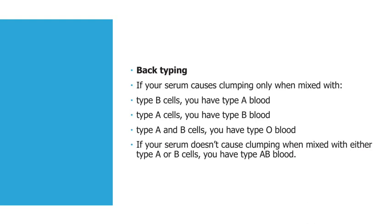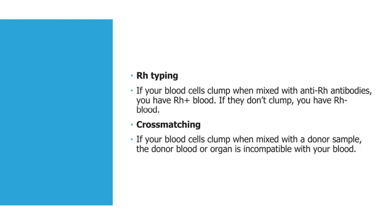Back typing results: if your serum causes clumping only when mixed with type B cells, you have type A blood. If it causes clumping with type A cells, you have type B blood. If it causes clumping with both type A and type B cells, you have type O blood. If your serum doesn't cause clumping when mixed with either type A or type B cells, you have type AB blood.